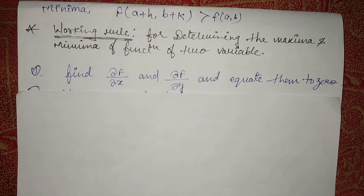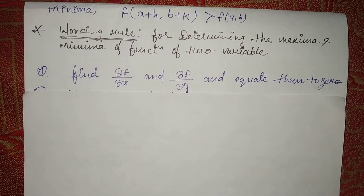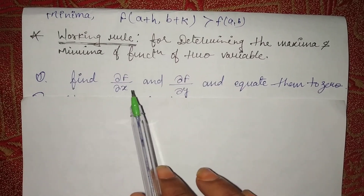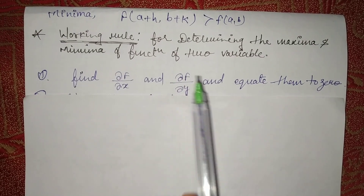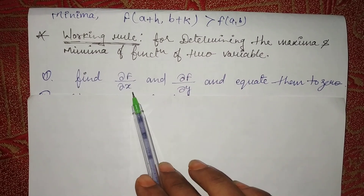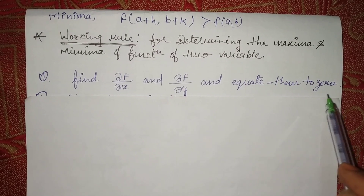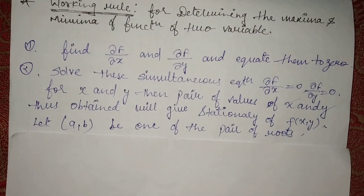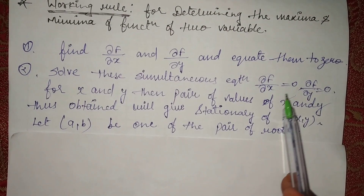Firstly, a function will be given in your question. Then we will find del f upon del x and del f upon del y. This is the first differentiation — with respect to x and with respect to y — and we equate it to zero.